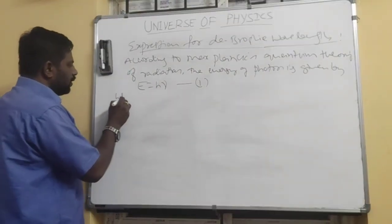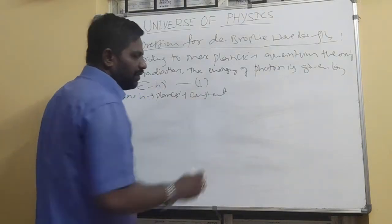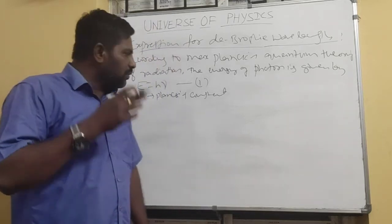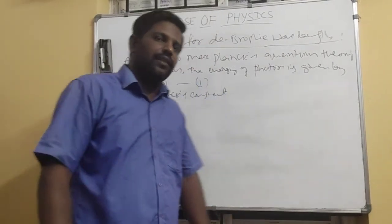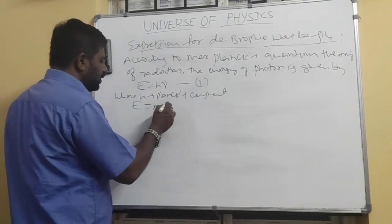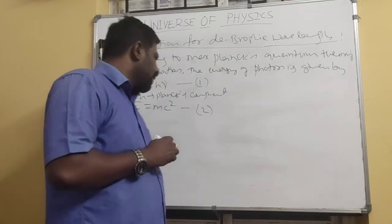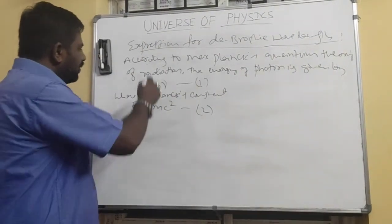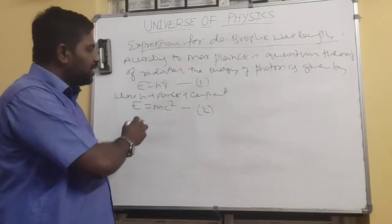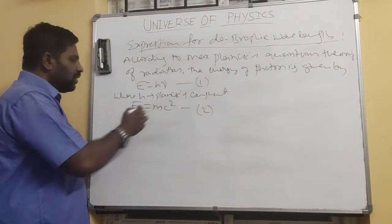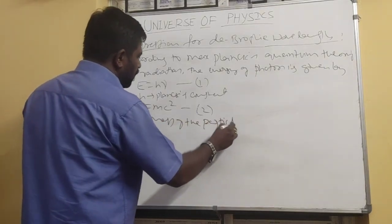Where h is Planck's constant and ν is the frequency of the radiation. We also know that according to Einstein's mass-energy relation, or Einstein's theory of relativity, E = mc², where m is the mass of the particle and c is the speed of light in vacuum.